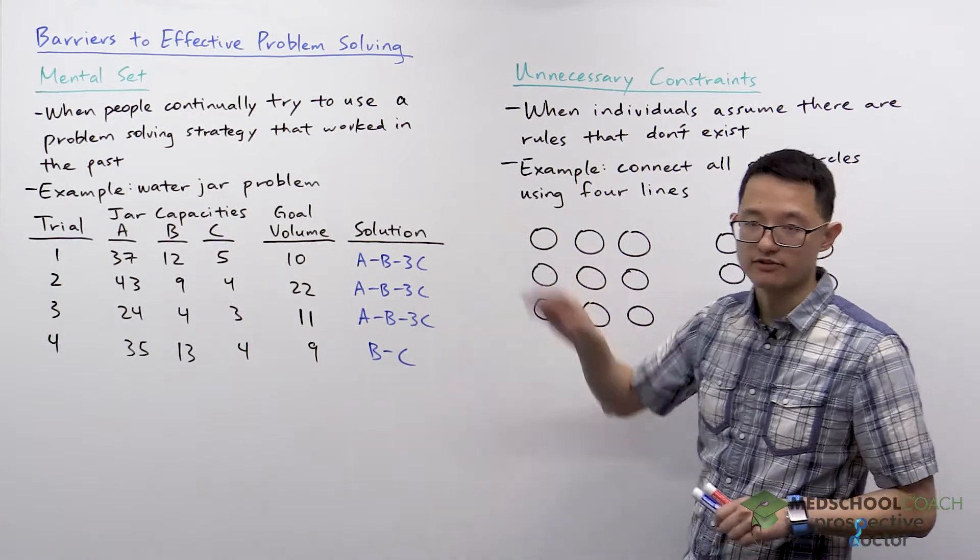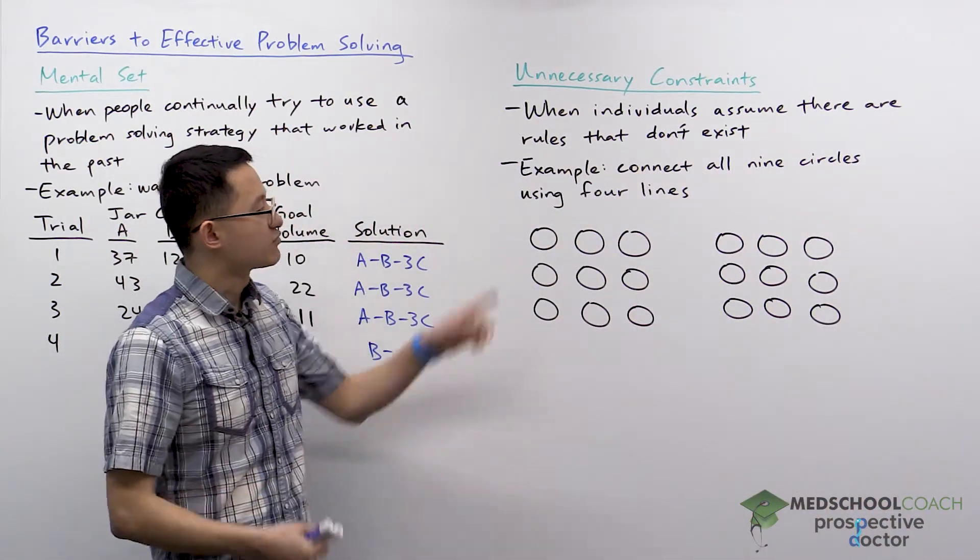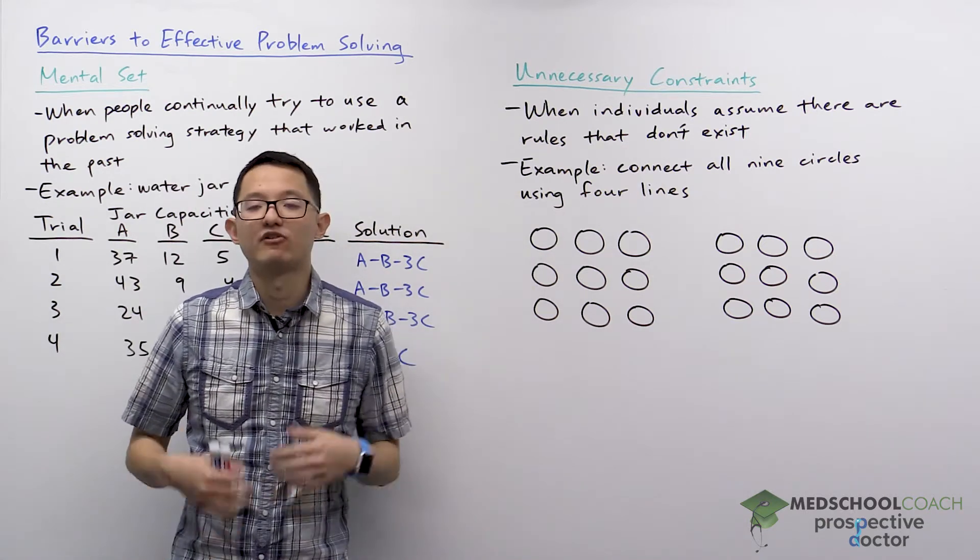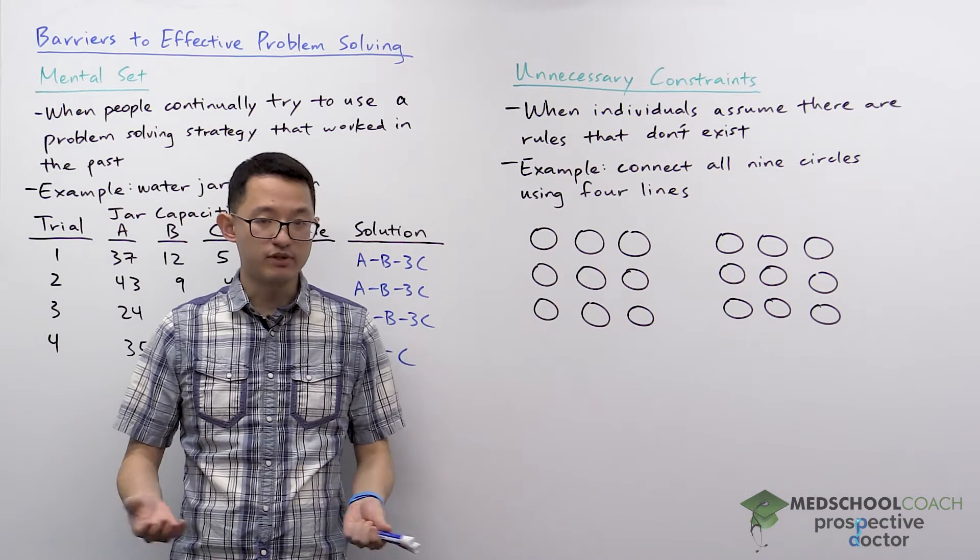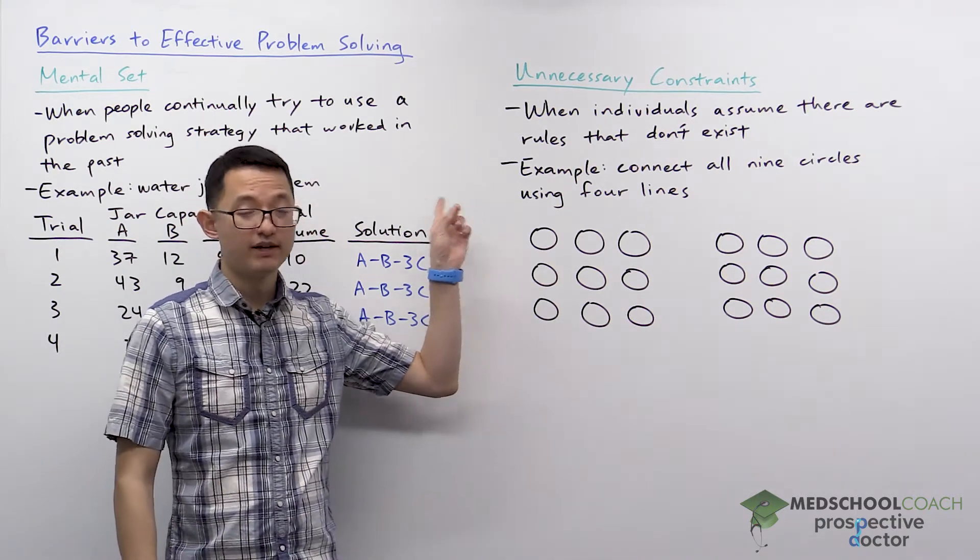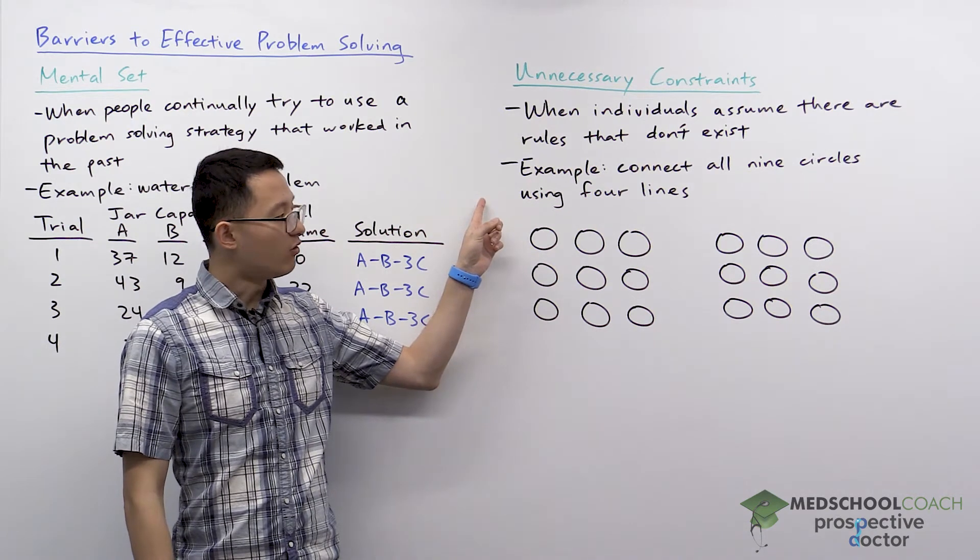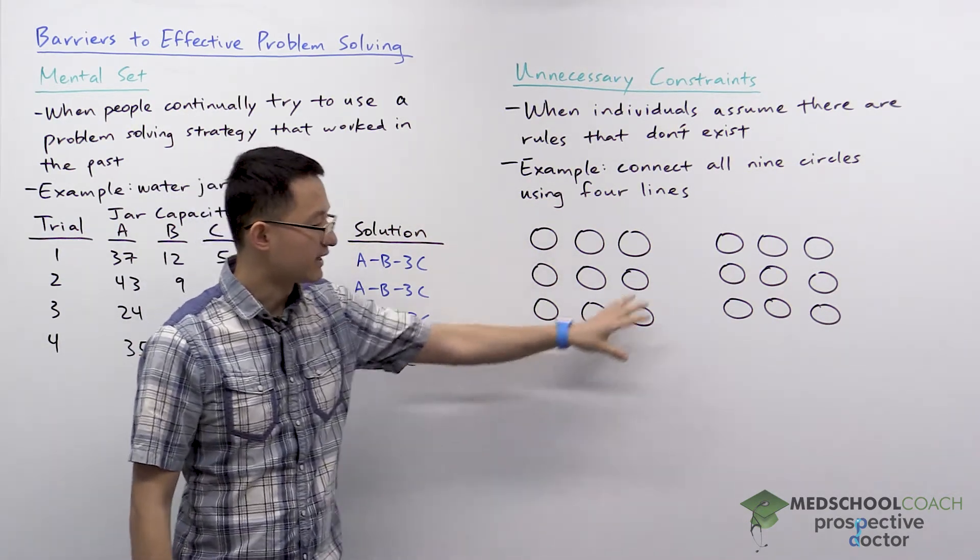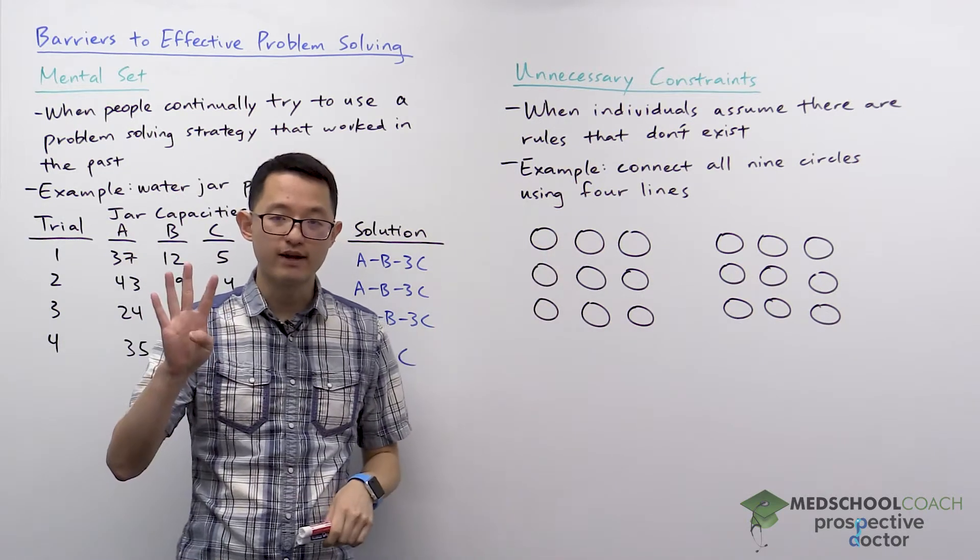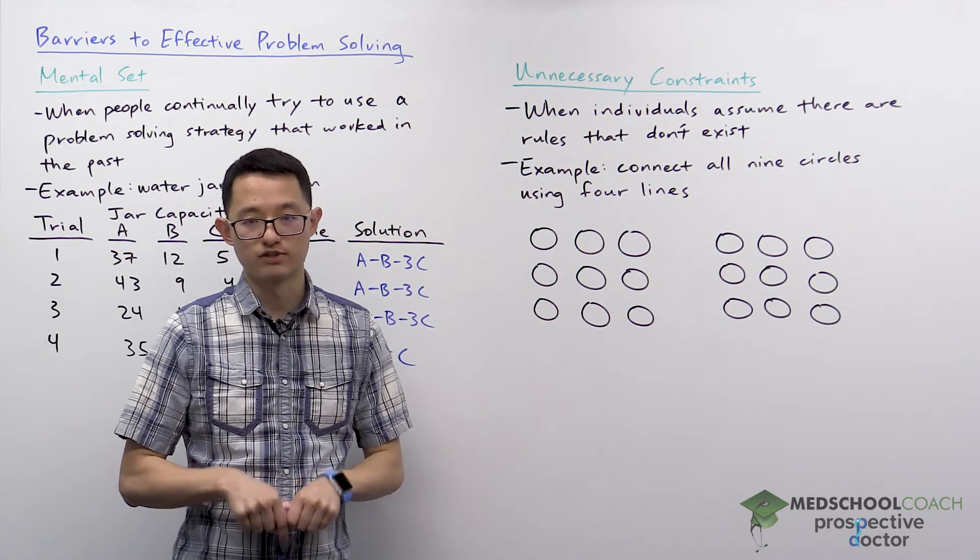So this is mental set. Let's now take a look at unnecessary constraints. This is when individuals assume that there are rules that don't exist. To better understand how this works, let's look at this example. You've probably seen it before, where you have to connect all nine circles using four lines. Here are the nine circles and you have four lines that you can use to connect all of the circles together.